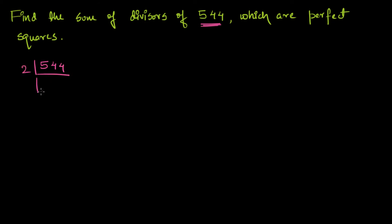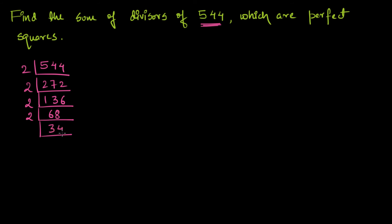So let us divide it by 2. 544 divided by 2 is 272, divided by 2 is 136, divided by 2 is 68, divided by 2 is 34, divided by 2 is 17, and finally 17 divided by 17 gives 1.